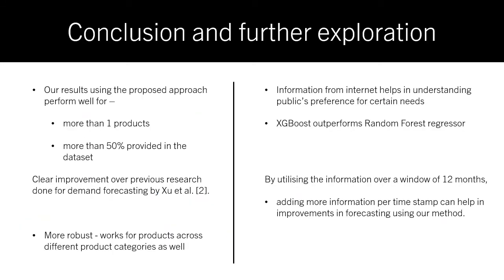From this project, we concluded that our results using the proposed approach perform well for more than 50% of the products in the dataset. This is a clear improvement over the previous research done for this demand forecasting problem, because the previous research only incorporated information about one product. Our pipeline is also more robust because it works well for products across different product categories. We also found that information from the internet can help us understand the public's preference for certain needs and demands of these products, and that utilizing a window of 12 months adds more information per timestamp that helps improve forecasting.